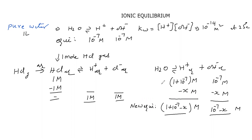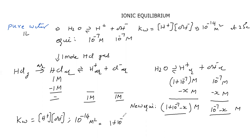For this equilibrium, we take the equilibrium constant: Kw equals concentration of H⁺ into concentration of OH⁻. At 25 degrees Celsius, Kw equals 10 to the power of minus 14 molar square. Substituting H⁺ concentration as 1 plus 10⁻⁷ minus x and OH⁻ concentration as 10⁻⁷ minus x, we can simplify to find x and determine the concentrations of H⁺ and OH⁻ in the new equilibrium.